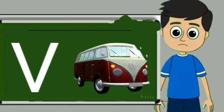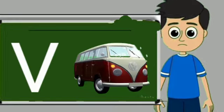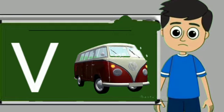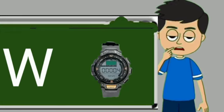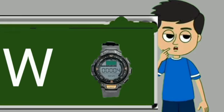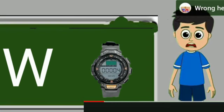V for van. Van means gadi. W for watch. Watch means ghadi.